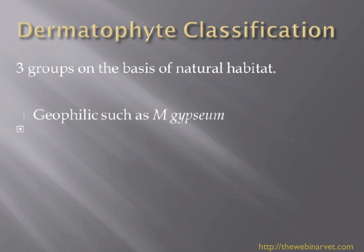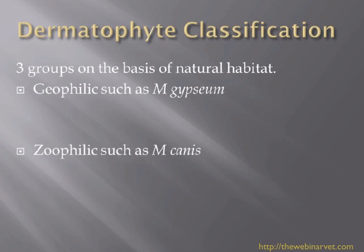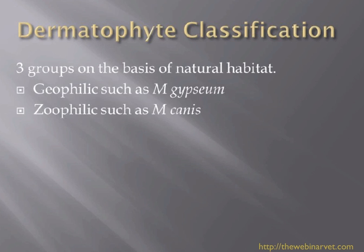There are really three groups of dermatophytes that we can classify, based on where they tend to live. We have geophilic dermatophytes such as Microsporum gypseum, which are found in the soil but can infect animals. We have zoophilic ones, which are found on animals and are transferred between animals — they can't live in the soil or don't do very well in the natural environment.